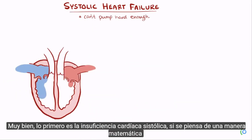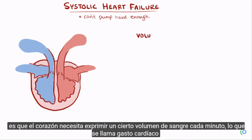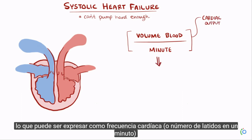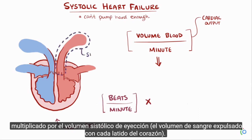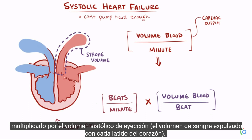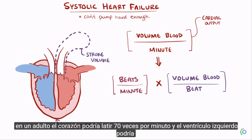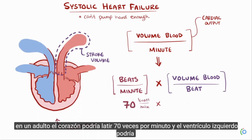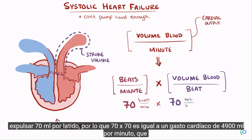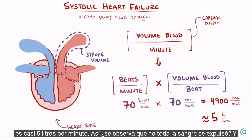A mathematical way to think about systolic heart failure is that the heart needs to squeeze out a certain volume of blood each minute, called cardiac output, which can be rephrased as the heart rate — the number of beats per minute — multiplied by the stroke volume, the volume of blood squeezed out with each heartbeat. An adult heart might beat 70 times per minute, and the left ventricle might squeeze out 70 milliliters per beat, giving a cardiac output of 4,900 milliliters per minute, which is almost 5 liters per minute.